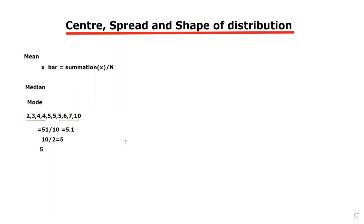Now spread, what is spread? Spread describes the variation of data. The two measures of spread are range and standard deviation, which is normally denoted by SD. This is the measure of spread.